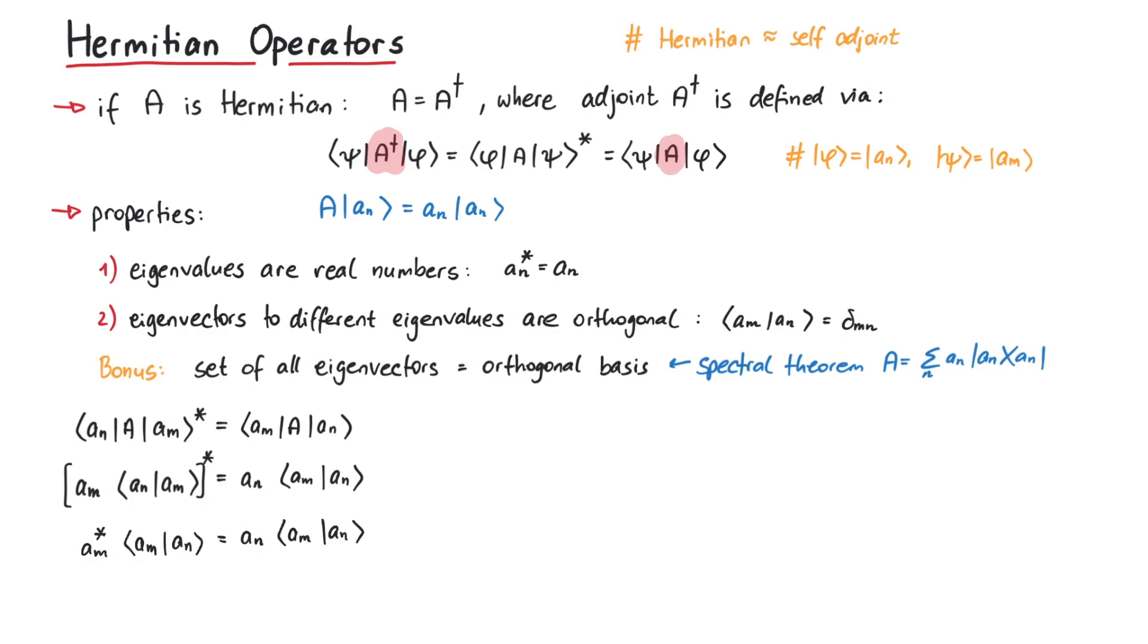We can now distinguish two cases. First, if m and n are equal, we can cancel the inner product on both sides, and we get am* = am, which means that the eigenvalues are all real numbers, which proves the first statement.